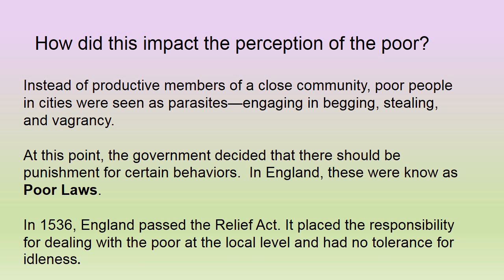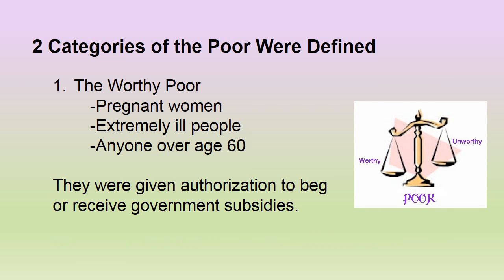In 1536, England passed the Relief Act. It placed the responsibility for dealing with the poor at the local level, and it had no tolerance for idleness. There's an old saying, 'idleness is the devil's hands.' The thought process was that if you are idle, you are not Christian. They defined two types of poor people. The first type were the worthy poor: pregnant women, people who were extremely ill, and anyone over the age of 60. Keeping in mind, in this era, most people died by the time they were 40, especially poor people.